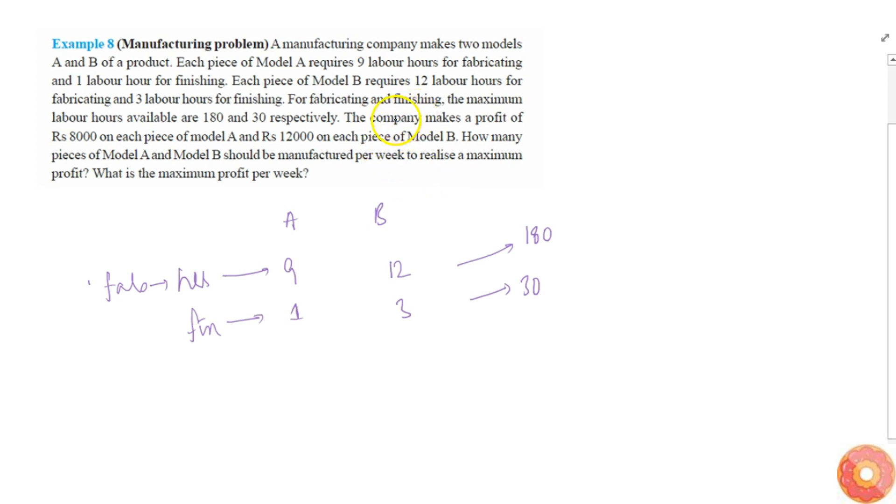The company makes a profit of Rs. 8000 on each piece of Model A and 12000 on each piece of Model B. How many pieces of Model A and Model B should be manufactured per week to realize a maximum profit? What is a maximum profit per week?